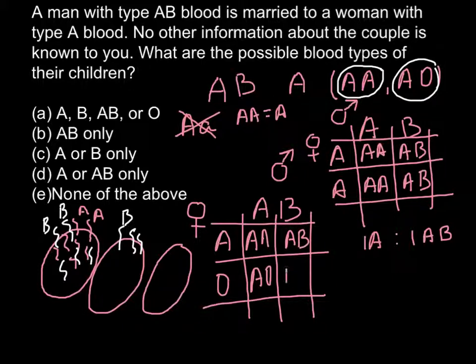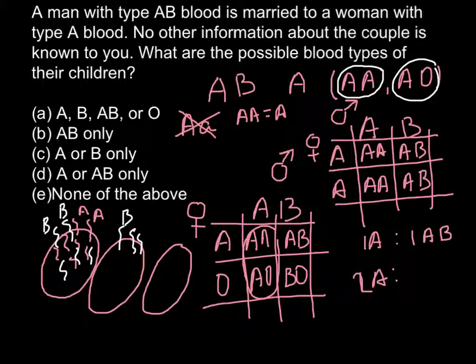And BO. So here we have ratio 1A to, actually, here we have AA and AO, that would be 2A's to 1AB to 1B. Because BO stands for B.